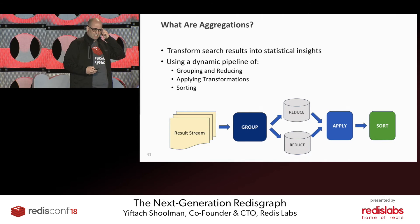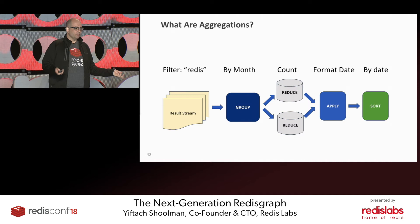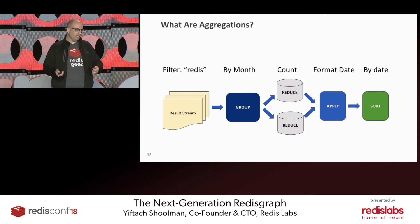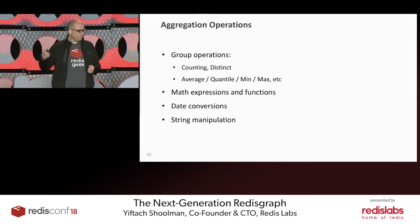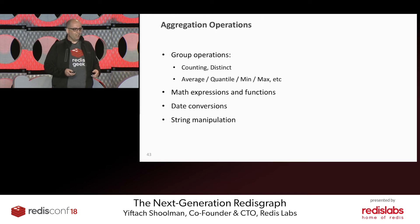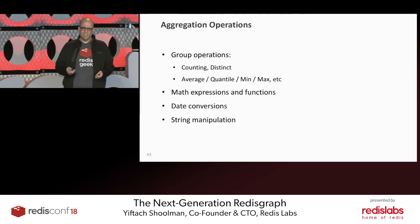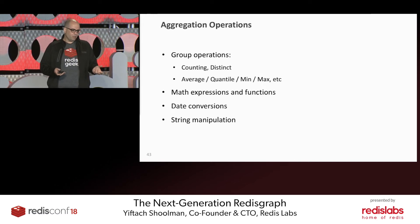For example, I can filter by Redis, group the results by month, count every month, then format the date. The operations available include: count, count distinct, min, max, standard statistical functions, mathematical functions, date conversion, string manipulation — a pretty rich feature set for aggregations from the start.